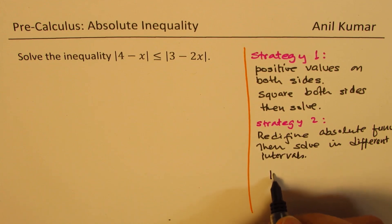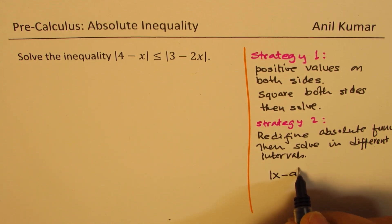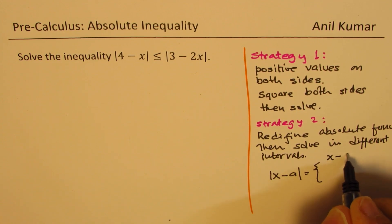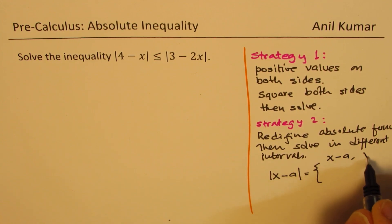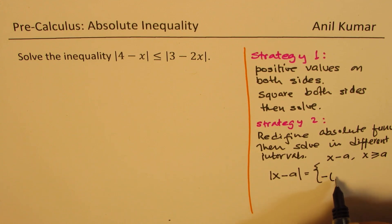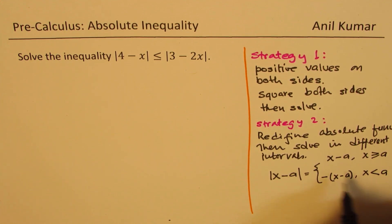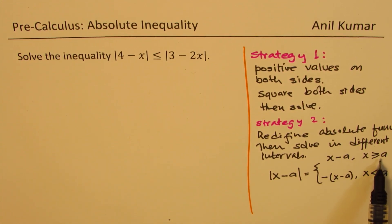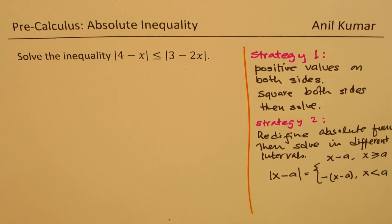Remember that the absolute value of x minus a equals positive (x minus a) when x is greater than or equal to a, and equals negative (x minus a) when x is less than a. We redefine the function and solve in intervals: from minus infinity to a, and then from a to infinity.